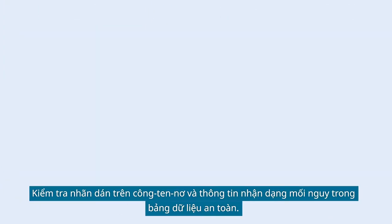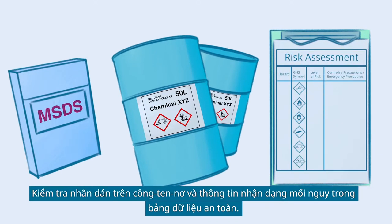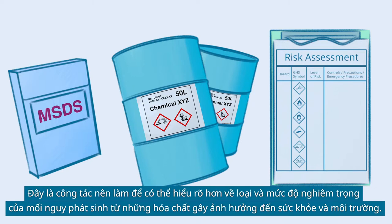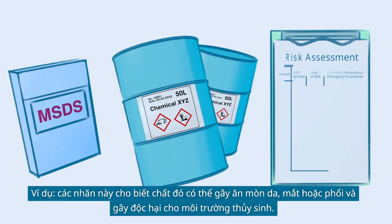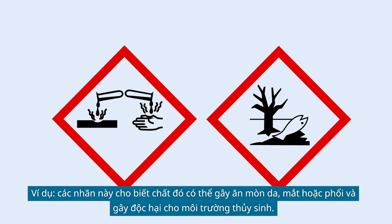Check the labels on the container and the information on hazard identification in the Safety Data Sheet. This should be done in order to better understand the type and severity of hazards to health and environment that the chemical may pose. For example, these labels indicate that the substance may be corrosive to skin, eyes or lungs, and toxic to aquatic life.